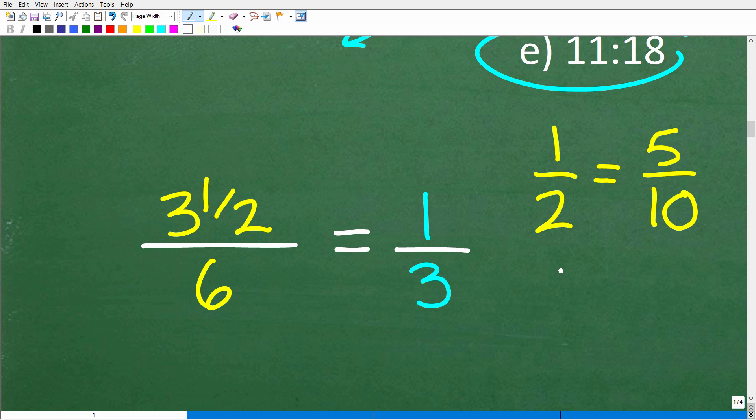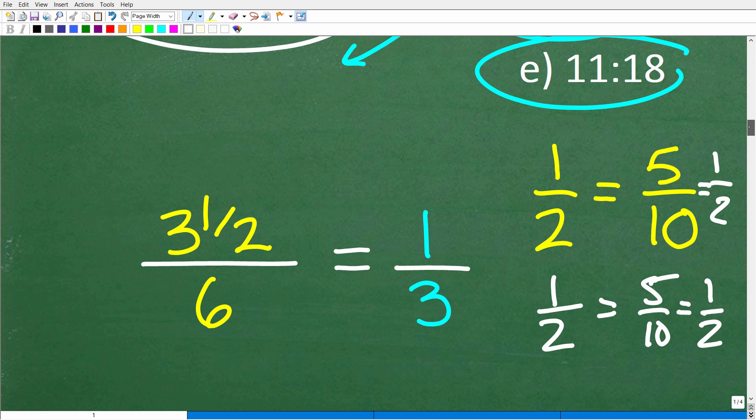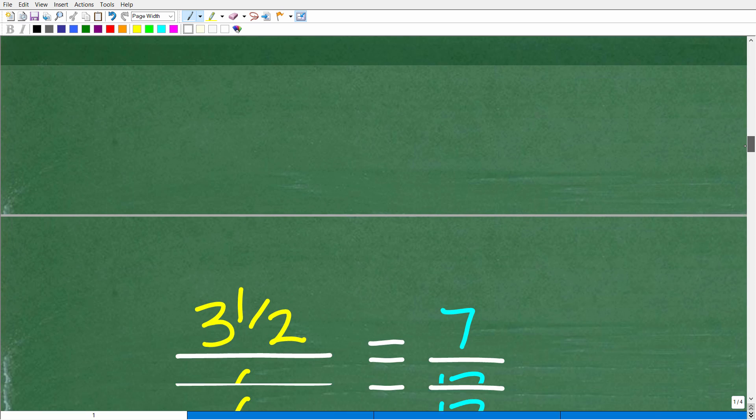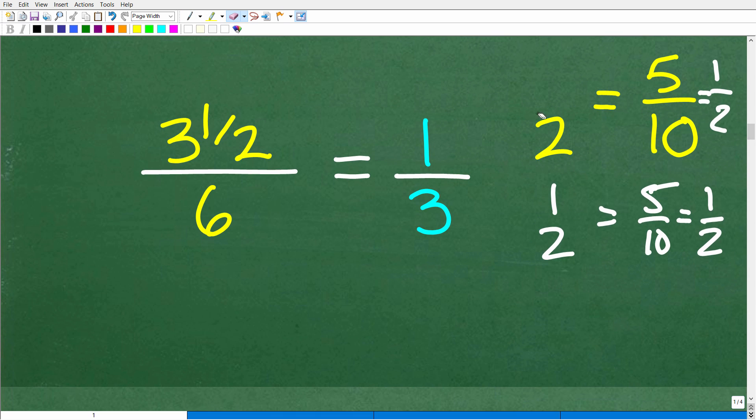The cross products are equal when you have a proportion, and a proportion is two equal fractions. 1/2, by the way, is the same ratio as 5 over 10. If this ratio is 1 to 2, this ratio is 5 to 10. But you can simplify this fraction down to 1/2. If we're looking for what is the correct ratio of 3½ days to 6 days, we could just simply test these values using the cross product. Let me back up and do the work right here.